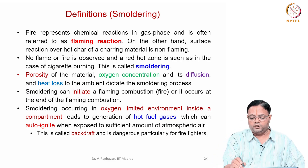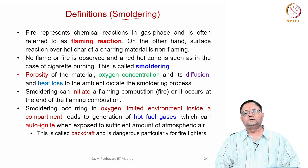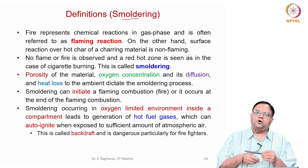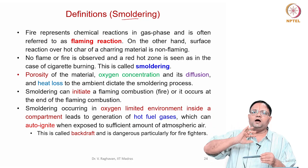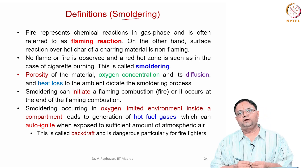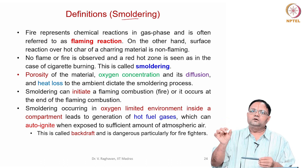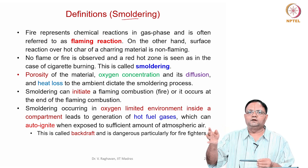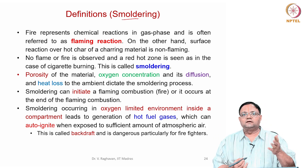Let us see some definitions on smoldering. Smoldering is a process where surface reaction takes place on some solid material which is porous in nature, where it is hot enough and oxygen from the ambient comes to the surface and reacts. For example, if you take a cigarette burning — tobacco packed in a porous media form — if you ignite it you see a red hot surface, a small thin surface of red hotness that propagates as the cigarette is consumed. That is an example of smoldering.